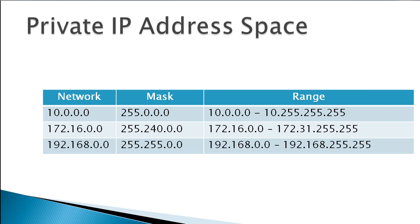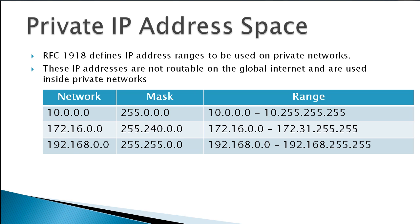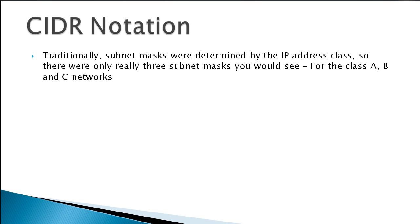We had a standard called RFC 1918 that defined IP address ranges to be used in private networks. These specific private ranges are not routable out on the global internet — they're only to be used on inside private networks. That's probably why most of you, if you check out how things run on your inside network at work, will see one of these three ranges. You'll also see them on your home routers, because your home inside network is a private network not routable out on the internet.